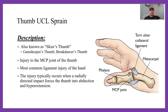Moving to ligamentous injury — thumb sprain. This is a UCL sprain, also known as skier's thumb, gamekeeper's thumb, or brake dancer's thumb. Essentially it's a tear or sprain of the UCL that holds the metacarpal bone and the proximal phalanx together. If your thumb gets hyperextended or hyperabducted, this ligament can become injured. It is the most common ligament injury of the hand, right at the MCP joint.